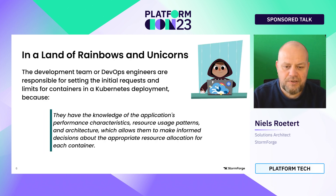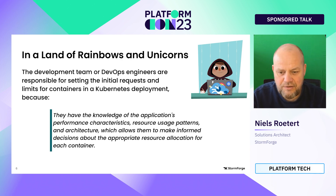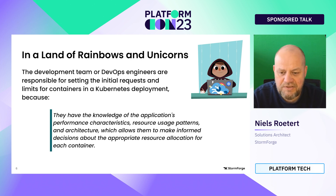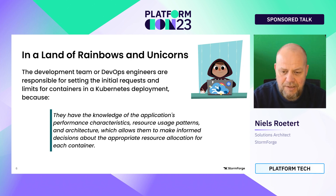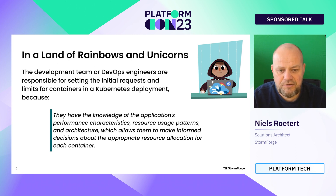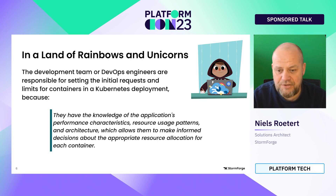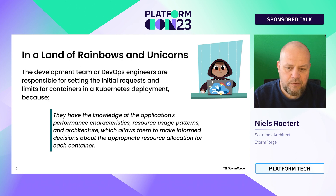In an ideal world, the developer knows the application and all its microservices well enough to decide on the number of resources needed and set those manually. But quite often people don't know very well — so either they have to guess, use some documented defaults, or if they want to be thorough, they will analyze the application requirements.